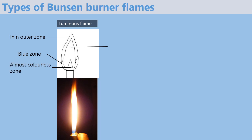Next is the almost colorless zone, found in the middle part of the flame where no air reaches, and therefore it is composed mainly of unburnt gases. The bright yellow zone mainly consists of tiny particles of hot glowing carbon that give out the light. In this zone the air supply is limited and there is incomplete combustion of the gas.